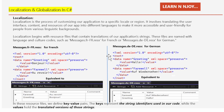Localization and globalization are essential techniques that allow us to make our application more accessible to users around the world. Localization involves adapting our software to specific languages, cultures, and regions, while globalization is the process of designing our application to support easy localization.